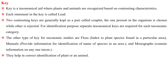Key is a taxonomical aid where plants and animals are recognized based on contrasting characteristics. Each statement in the key is called a lead. Two contrasting keys are generally kept as a pair called a couplet. The one present in the organism is chosen while the other is rejected. Separate taxonomical keys are required for each taxonomic category. Other tools for taxonomic studies include flora, which indexes plant species found in a particular area; manuals, which provide information for identifying species in an area; and monographs, which contain information on any one taxon. They help in correct identification of a plant or animal.